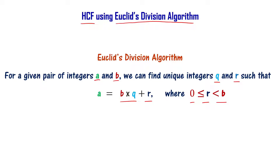Euclid's division algorithm states: if you have two integers a and b, we can find two more unique integers q and r such that it can be written as a equals b times q plus r, where r is less than b and r can also be equal to 0.